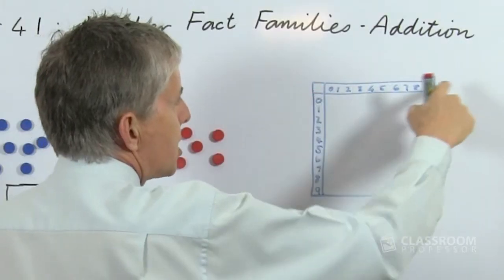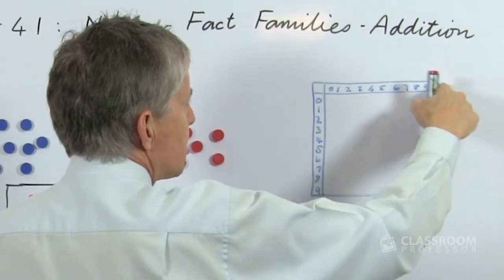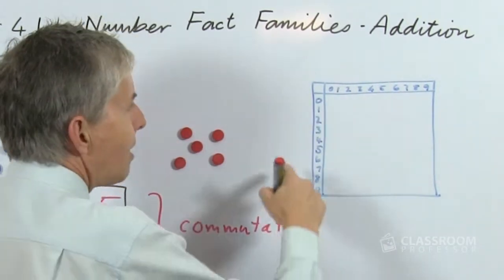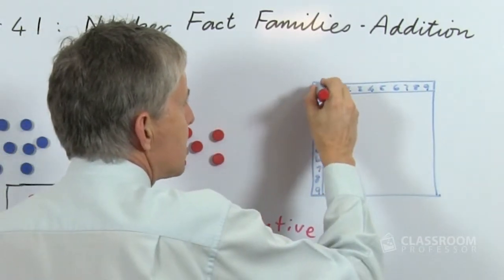Along the top, of course, it has numbers from 0 up to—and as I said I think it goes to 10—and down the left-hand side the same thing. And then we can find all the number facts, so if this is an addition grid...